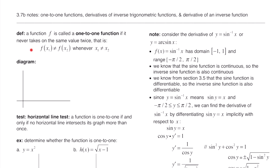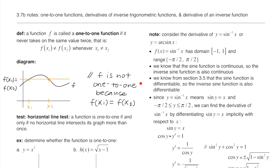This first definition says a function f is called a one-to-one function if it never takes on the same value twice. So f of one x value is not equal to f of another x value whenever those x values are different — you don't want the same height. I drew a generic graph for f, drew a horizontal line through the curve, and you can see that at two different x values the graph attains the same height. f is not one-to-one because f(x₁) equals f(x₂).